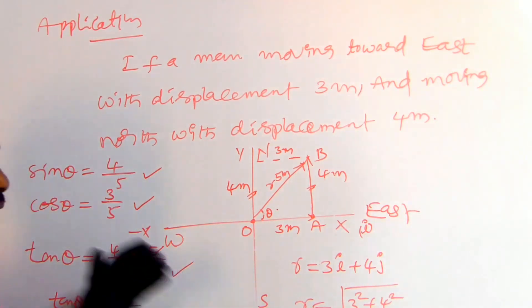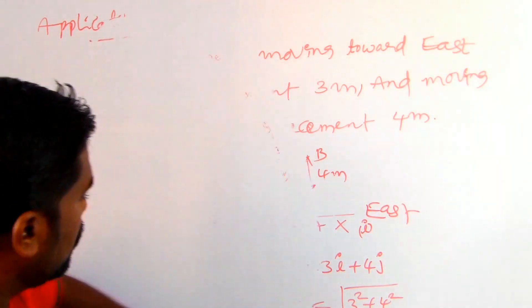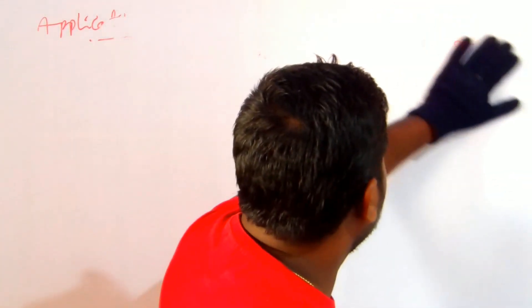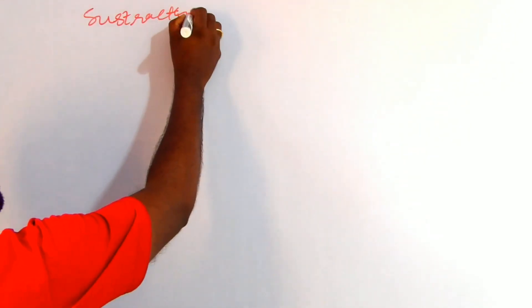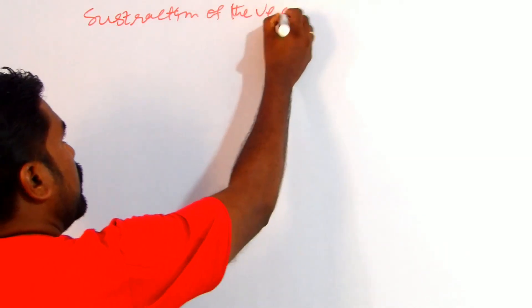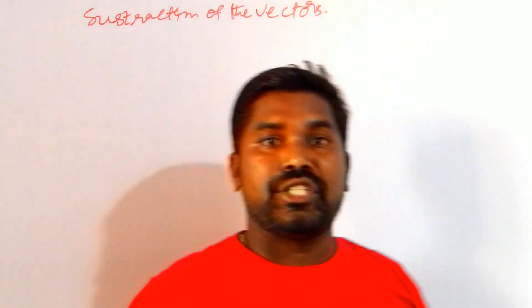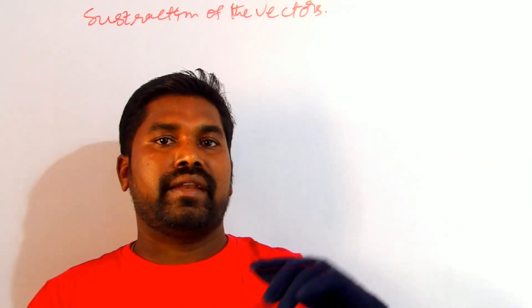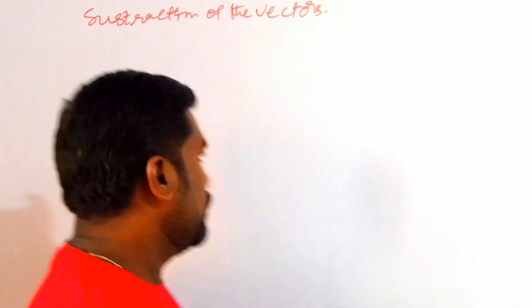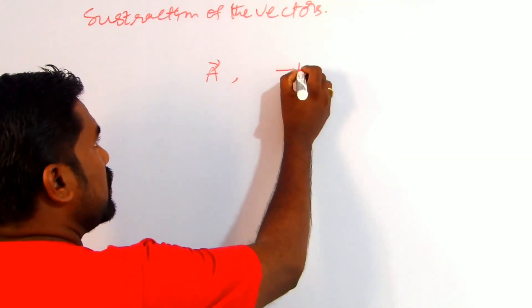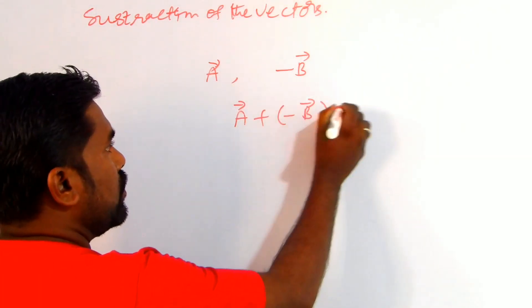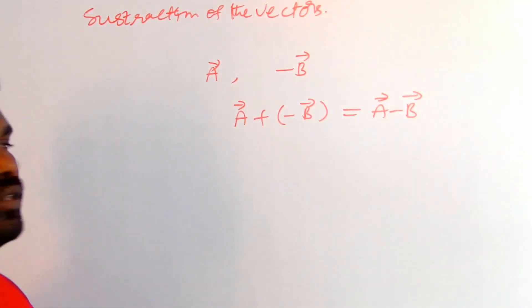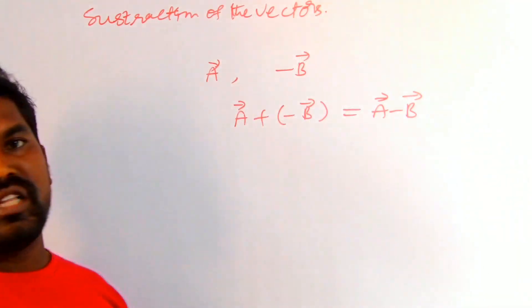Please take a screenshot and note down these points. Next, the subtraction of vectors is also nothing but a form of addition. If vector a and vector minus b are added to each other, then a plus (minus b) gives a minus b.